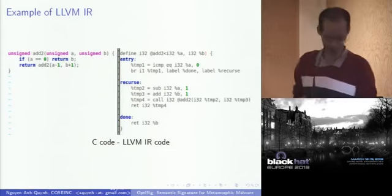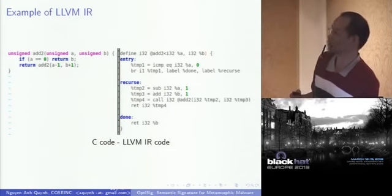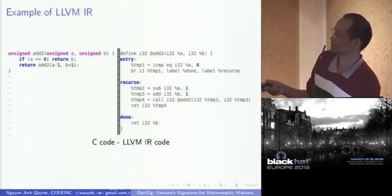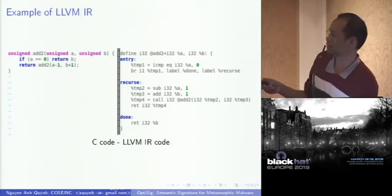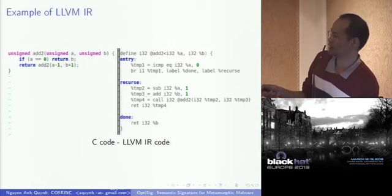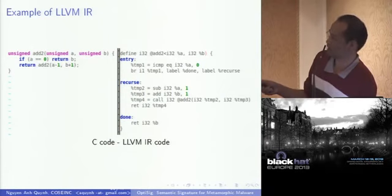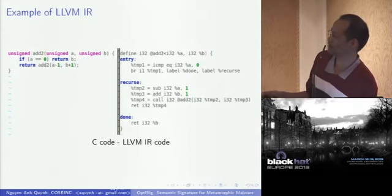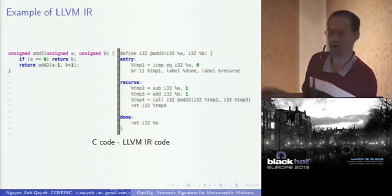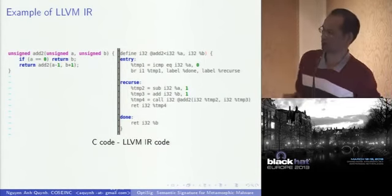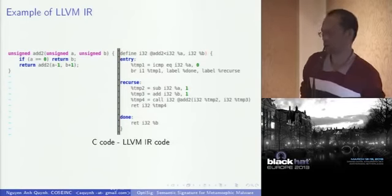Here's a simple example. On the left side we have C code, and we compile it to LLVM IR on the right side. Here's the LLVM IR function and its arguments. On the left side, if A is zero we return B. On the right side, we have the LLVM instruction comparing A to zero. If equal, we jump to 'done'; if not equal, we jump to the recursive call. That's the LLVM IR code — quite simple.